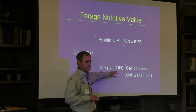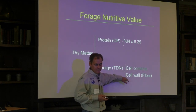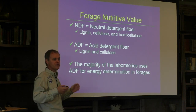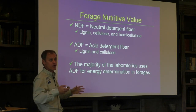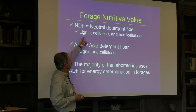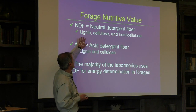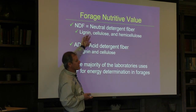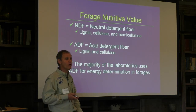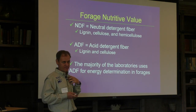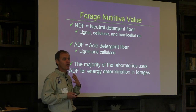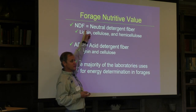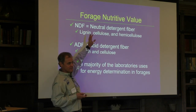From an energy standpoint, we focus on cell contents — the most digestible fraction — and fiber, some of which is also digestible. NDF contains lignin, cellulose, and hemicellulose. Cellulose is digestible, hemicellulose is partially digestible, and lignin is theoretically not digestible. People think higher NDF means lower intake, but that's not necessarily true for warm-season forages — sometimes NDF is high quality, and intake remains good.